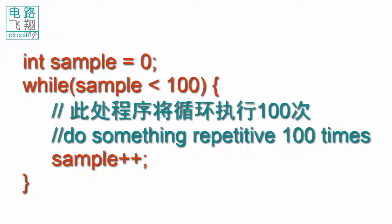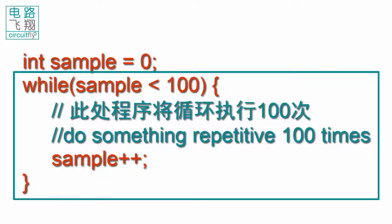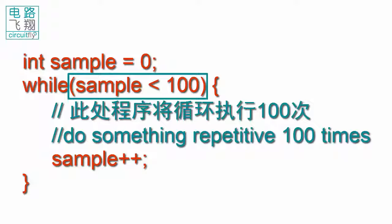举例来说,有所示的while循环。变量sample一开始赋值0,在while循环中,如果判断出sample小于100。